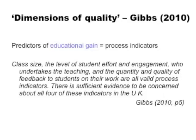I've chosen this quote by Graham Gibbs as an example of one of the complexities and difficulties of carrying out educational evaluation. These four criteria that Gibbs refers to — class size, student effort, who teaches, and quantity and quality of feedback — are, according to Gibbs, the best predictors of student gain through engagement with their course. What Gibbs is concerned about with these four indicators of quality, in the UK anyway, is that our commonly used quality assurance processes don't normally gather good data about them.